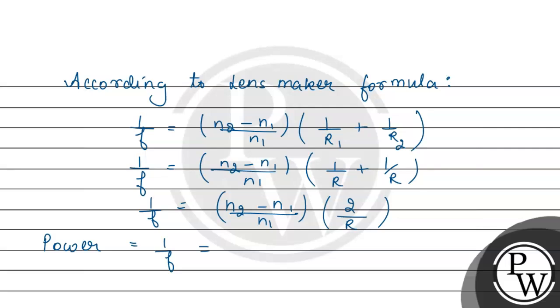So, power P equals 1 by F. Therefore, P equals N2 minus N1 by N1, into 2 by R.